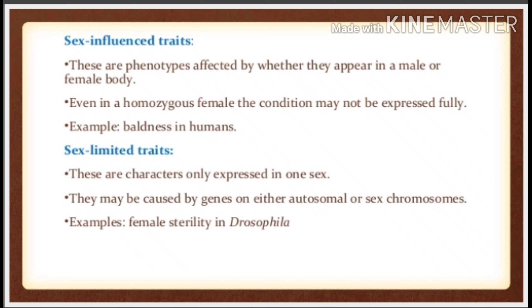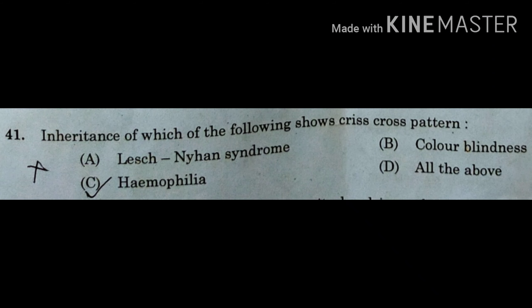In sex-influenced traits, the genes may be present in both male and female but expressed only in one sex. But in sex-limited traits, the genes are present in only one sex and expressed in one sex — that is the main point. Now looking at the options: Option A, Lesch-Nyhan syndrome is characterized by accumulation of uric acid, and those patients exhibit self-mutilation — they are harming themselves. It is an X-linked recessive disorder. Colorblindness and hemophilia are also X-linked recessive disorders. Options A, B, and C all exhibit criss-cross pattern. So the correct answer is Option D, all the above.